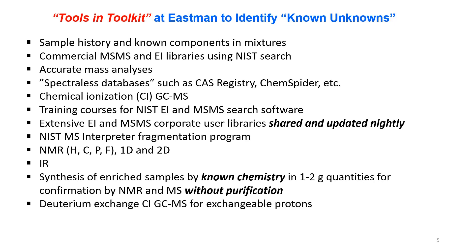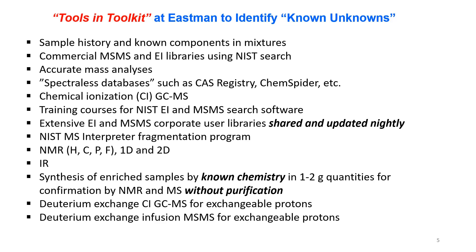Extensive EI and MSMS corporate user libraries are shared and updated automatically nightly. We use NIST MS Interpreter for fragmentation, NMR, infrared, and synthesis of enriched samples by known chemistry in one to two gram quantities for confirmation by NMR and mass spec without purification of proposed structures. We use deuterium exchange CI GCMS and infusion MSMS for determining exchangeable protons. Derivatizations for GCMS — in particular TMS (trimethylsilyl) derivatives — are very useful because NIST has many derivatives in their libraries.